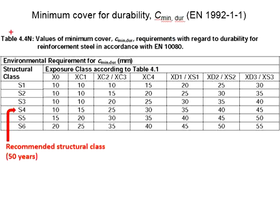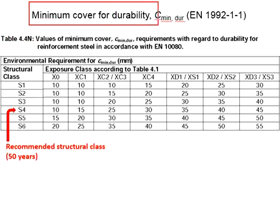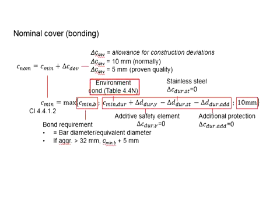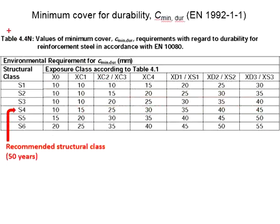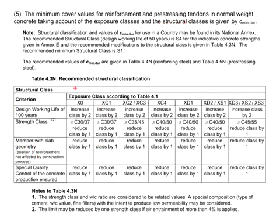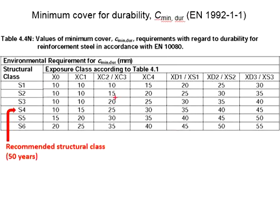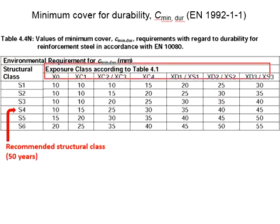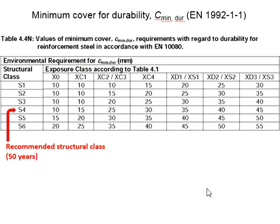Next we deal with Table 4.4n, which is meant for the minimum cover for durability of concrete, referring to environmental conditions. This table is normally used together with Table 4.3. The structural class is divided into six categories from S1 to S6, and they have exposure classes from X0 to XD3.